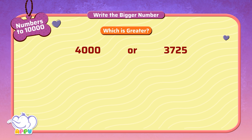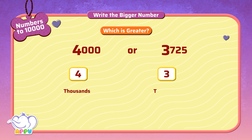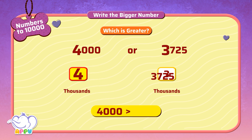To find the greater number, we first compare the numbers in the thousands place. Here we compare 4 and 3. Since 4 is greater than 3, 4000 is greater than 3725. I am so proud of you.